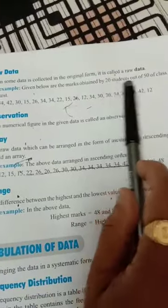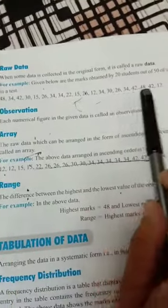See, in a test with 20 students, the test results are written as is - no order, nothing. Whatever information is collected, you write it like that. This is called raw data.